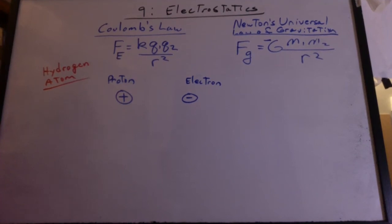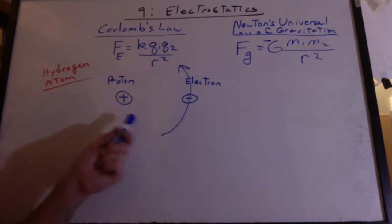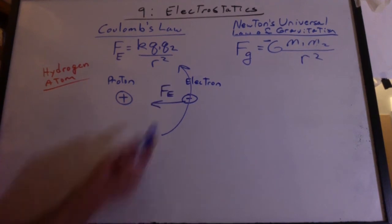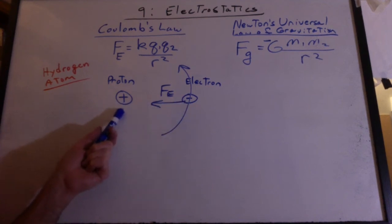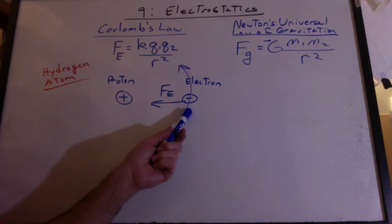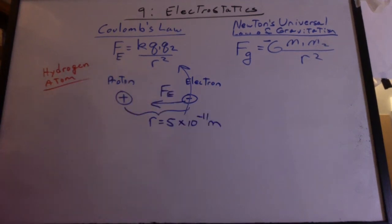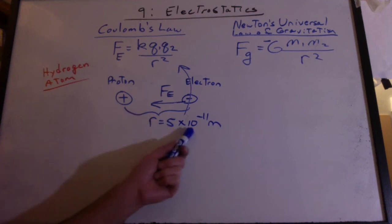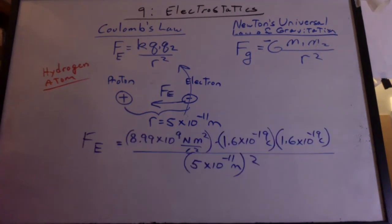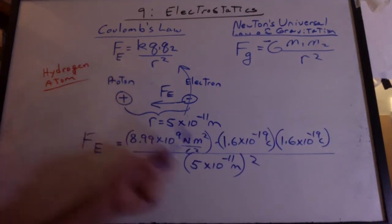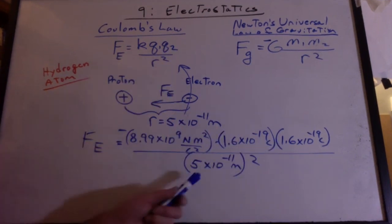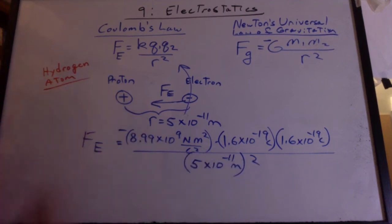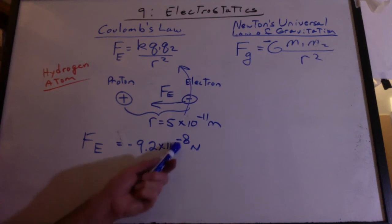Let's do an example with a hydrogen atom. We have a proton and an electron — the electron goes around the proton. What keeps it in circular motion? It's the electrostatic force. The proton is also pulled toward the electron, but it has a lot of mass so it's not going anywhere compared to the lightweight electron going in the circle. If the hydrogen atom has a radius of about 5 times 10 to the minus 11 meters, we can calculate that force using K, the charge on the proton, the charge on the electron (with the negative sign), divided by (5 times 10 to the minus 11)². We get 9.2 times 10 to the negative 8 Newtons.